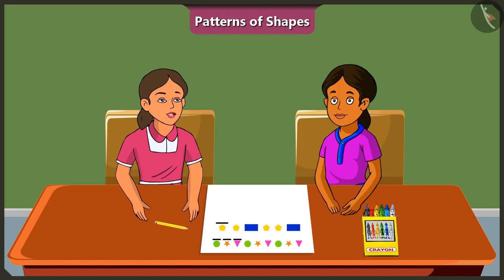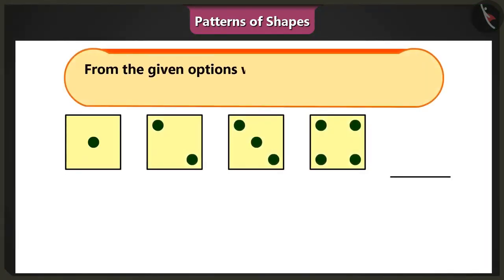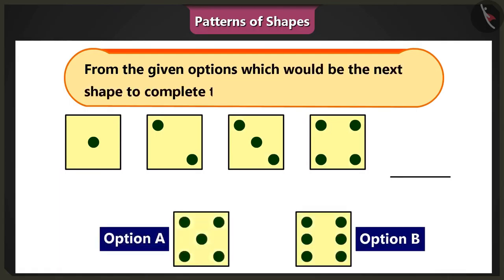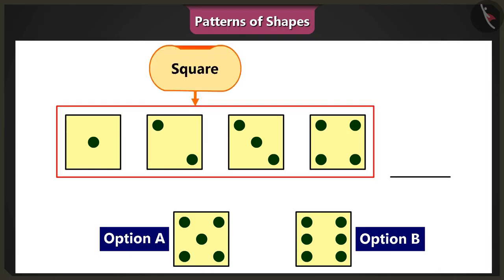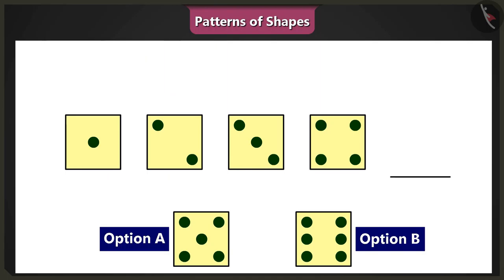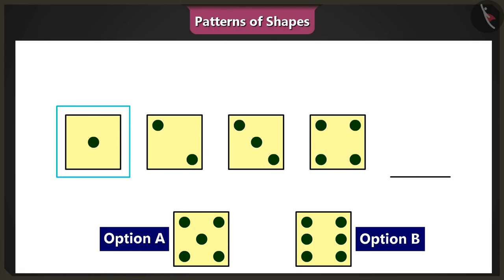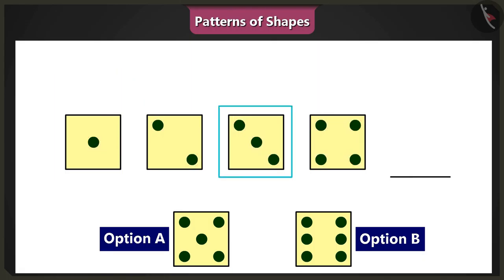This is fun. Ask me another question. Complete the pattern that you see here by choosing one of the two options provided. But all these are square shapes. There is no pattern here. Oh, look closely. All the squares have dots inside them. Yes, and the number of dots varies in each square, right? The first square has one dot and the second has two. Third square has three and the fourth has four dots. This means that the dots in these squares are in ascending order.